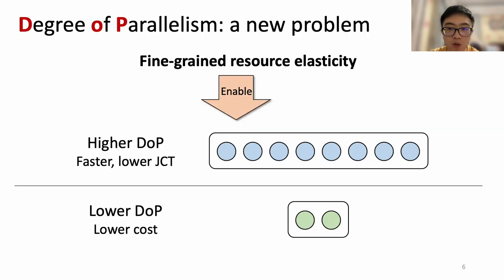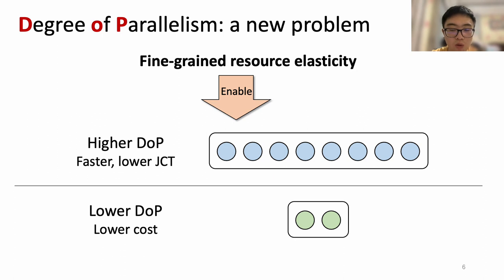This paradigm introduces a new scheduling problem for serverless users. The number of parallel functions, or the degree of parallelism, or DOP for short, affects both JCT and cost of the application. The fine-grained resource scaling of serverless computing enables us to adjust the DOP of each stage for optimization. For example, a stage with high resource demands can leverage higher parallelism for lower JCT, while a stage with low resource demands can use fewer parallel tasks to save cost.